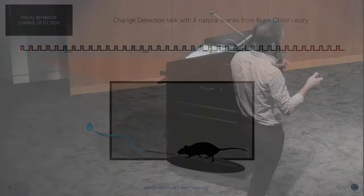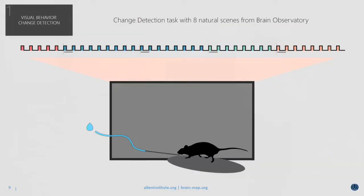For the first iteration of the Visual Behavior Brain Observatory, we've developed a change detection task which, from a mouse's perspective, consists of a continuous series of flashing stimuli — eight natural scenes from the original Visual Coding Brain Observatory. We train the mice to emit a behavioral response, a single lick on a lick spout, when the identity of the stimulus changes. If they emit this response in the short response window following the change, they receive a reward.